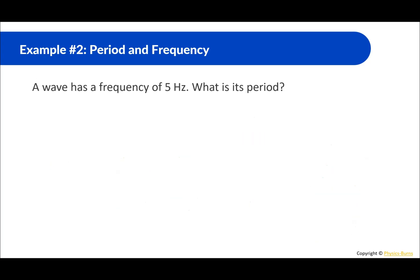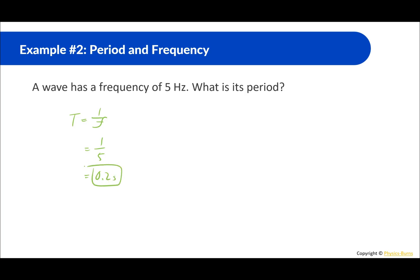A wave has a frequency of 5 hertz. What is the period? Period is just the inverse of frequency: 1 divided by 5 equals 0.2 seconds. It takes 0.2 seconds to complete one full cycle.